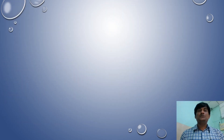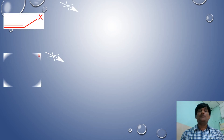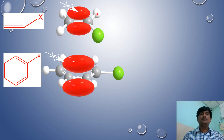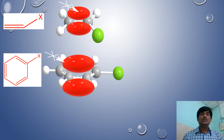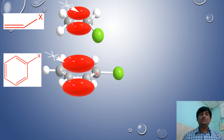For SN2 reactions involving vinyl halides and aryl halides, the pi electron cloud present above and below the plane of the molecule blocks the approach of the nucleophile to the reaction center. Therefore, the approach of the nucleophile is very difficult, and these compounds cannot exhibit SN2 type of reactions.